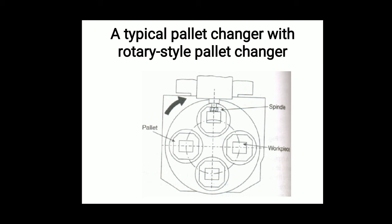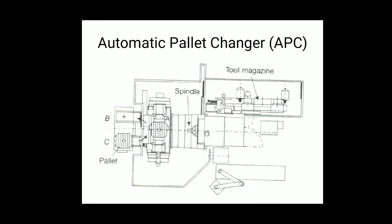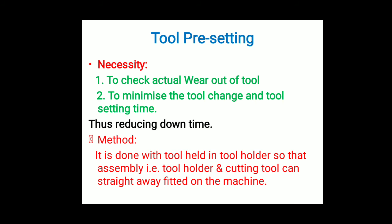By using pallets we can go for mass production with the help of standard pallet sizes — generally 500×500 or 630×630 mm. There are two types: with holes and with T-slots. The automatic pallet changer machine allows us to change the pallet type easily to support required production.